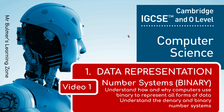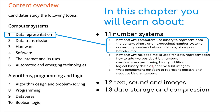Welcome to the first video which supports the first topic, data representation, for the IGCSE and O-Level Computer Science course from Cambridge. We're going to be looking today at number systems, but primarily binary. We'll cover how and why computers use binary to represent data, the denary, the binary, and a little bit about the hexadecimal number system, and converting numbers between denary and binary.